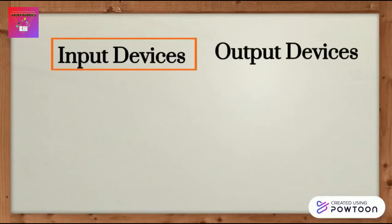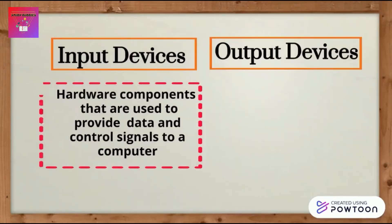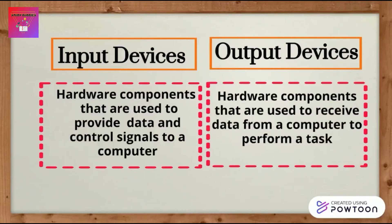The difference between input devices and output devices is: input devices are hardware components used to provide data and control signals to a computer, while output devices are hardware components used to receive data from a computer to perform a task. In other words, input devices send data to the computer while output devices get data from the computer.